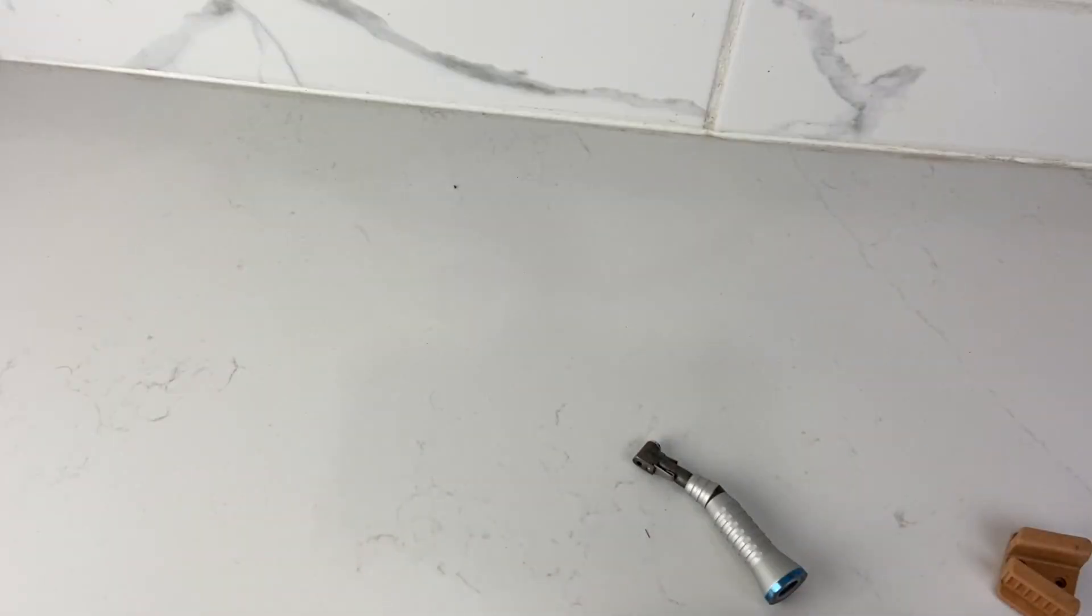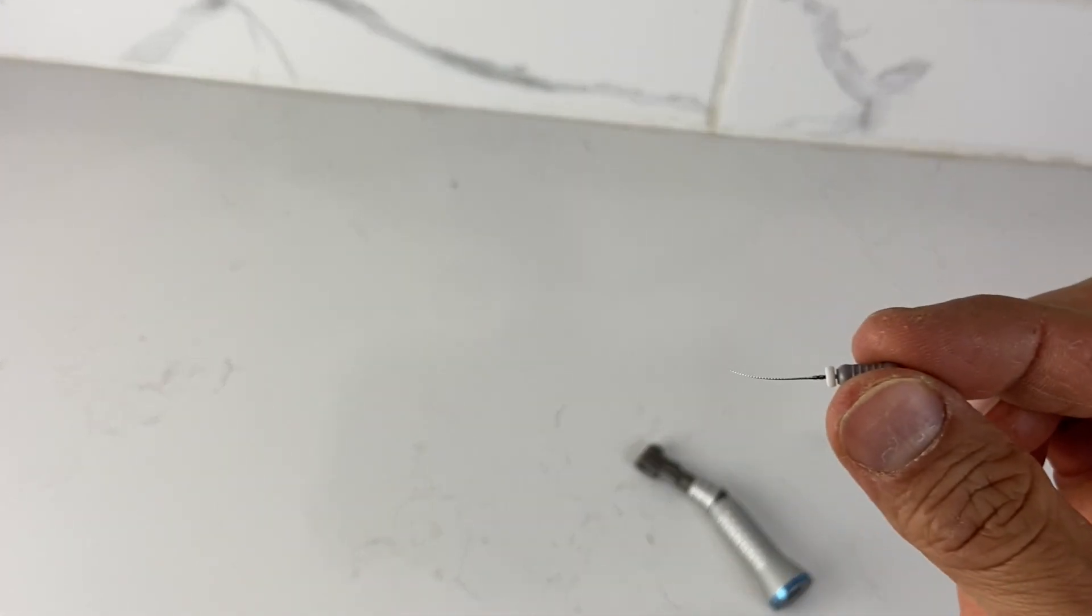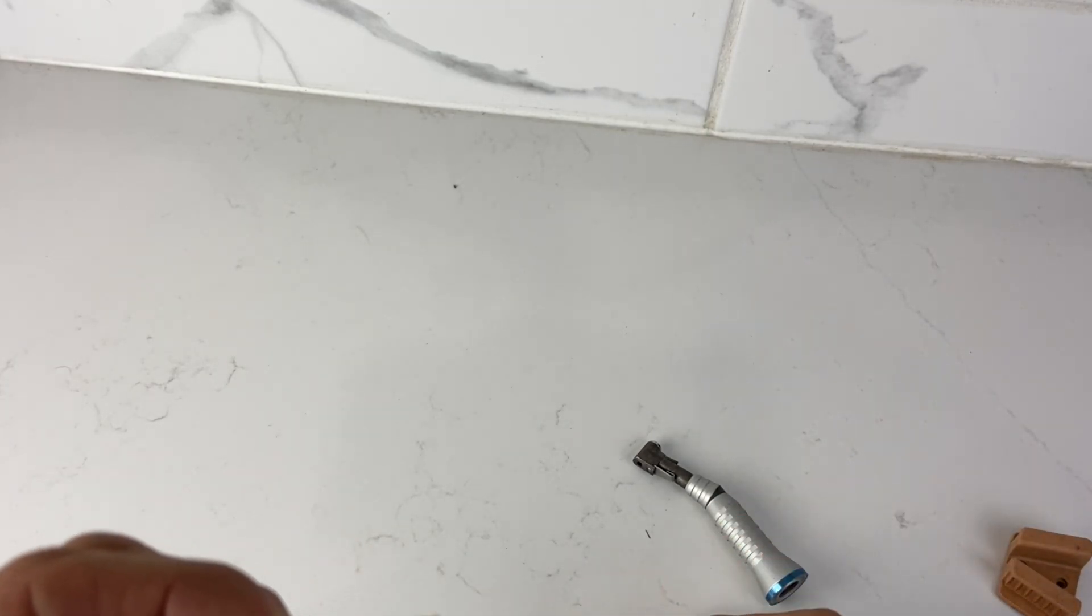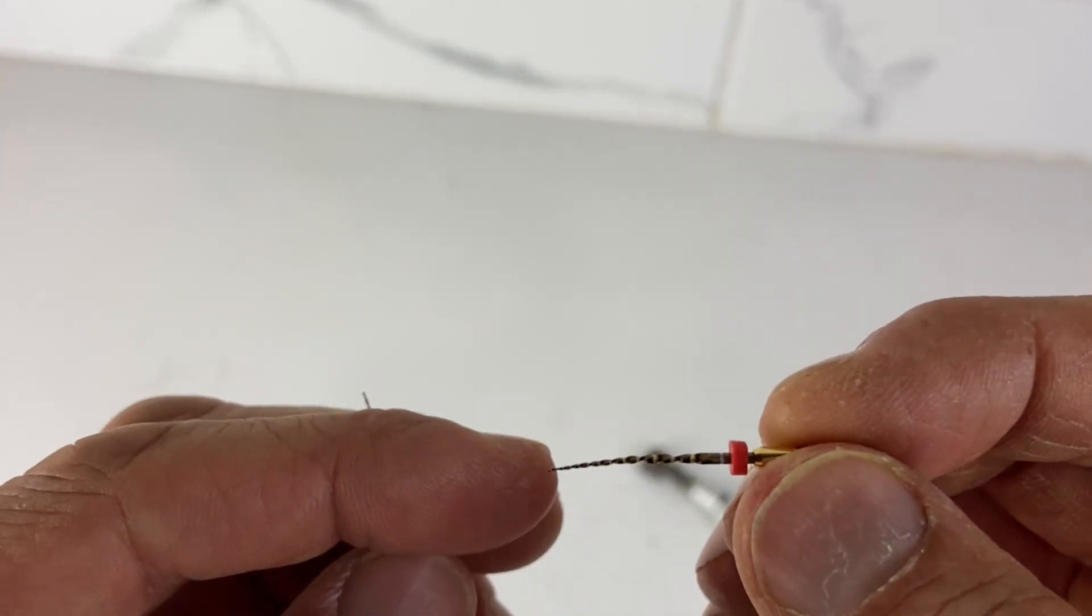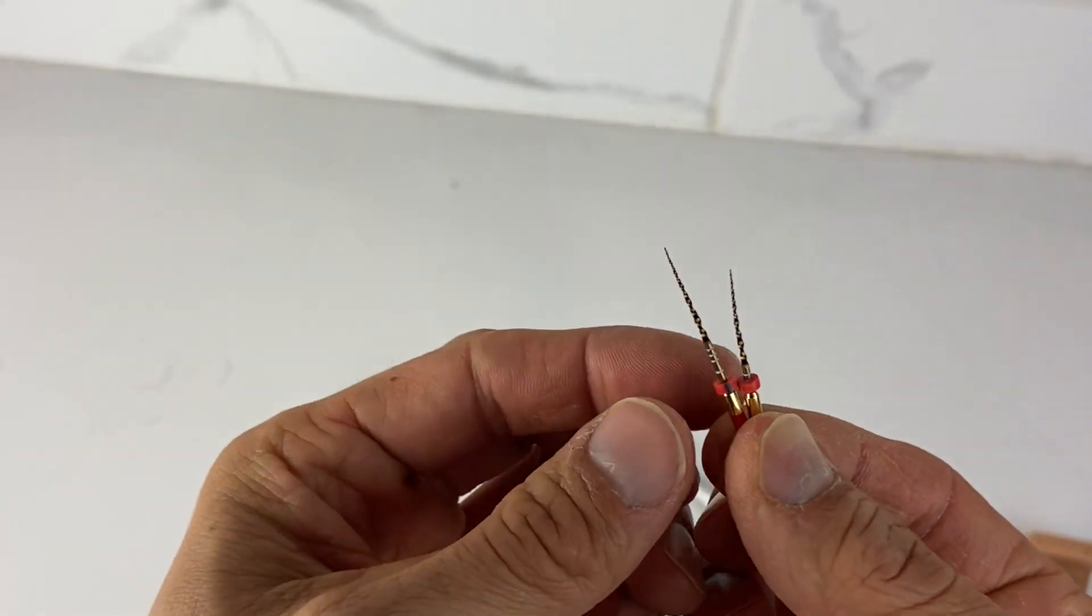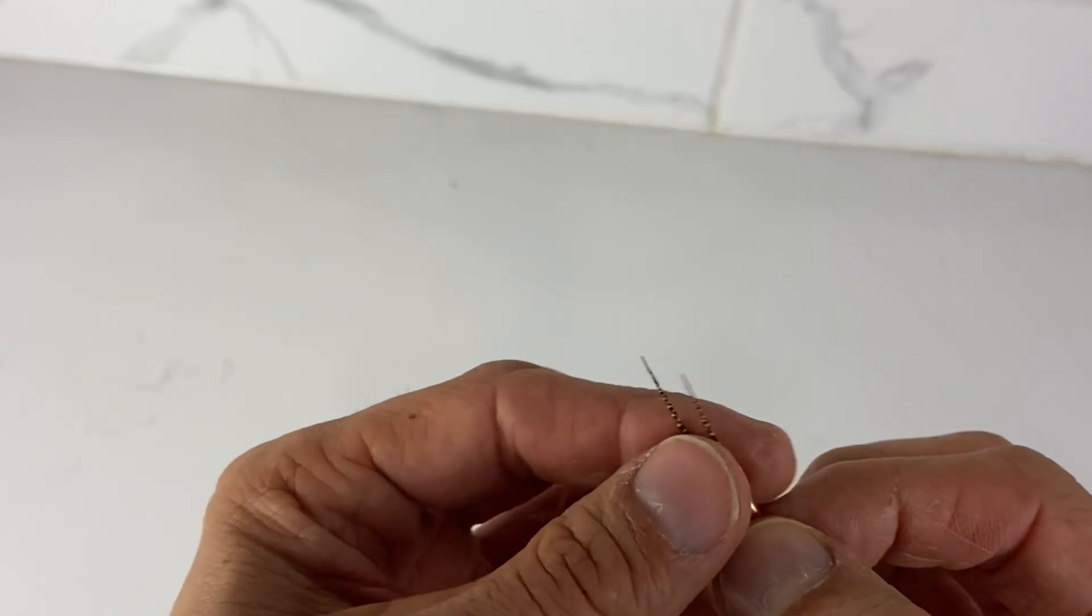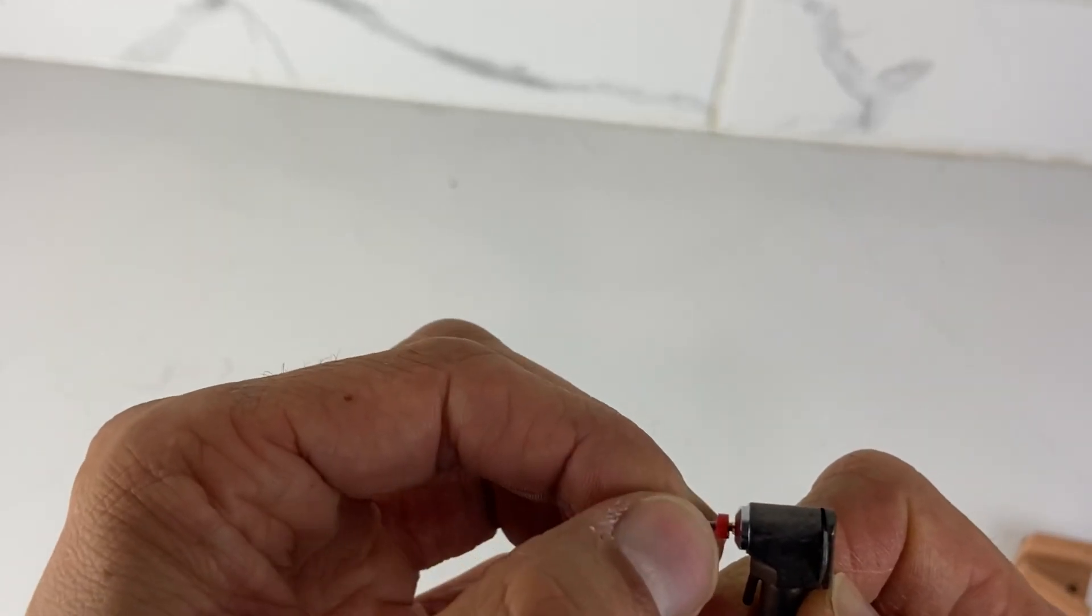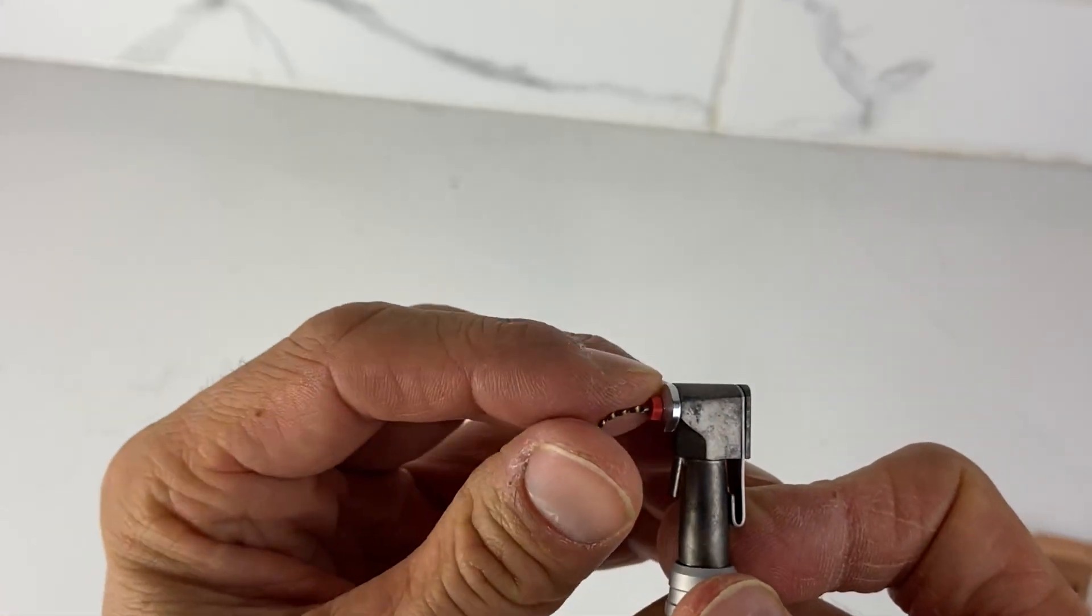So the next thing is 21 millimeter rotary files or reciprocating files, whatever you're using, that four millimeter makes a difference. And on these, this is a really old handpiece I found in the basement. So what I will do is I will bend the heck out of this. So I'll bend it like this, I'll get it kind of flexed. Then I'm going to take it with my finger and my thumb comes around.